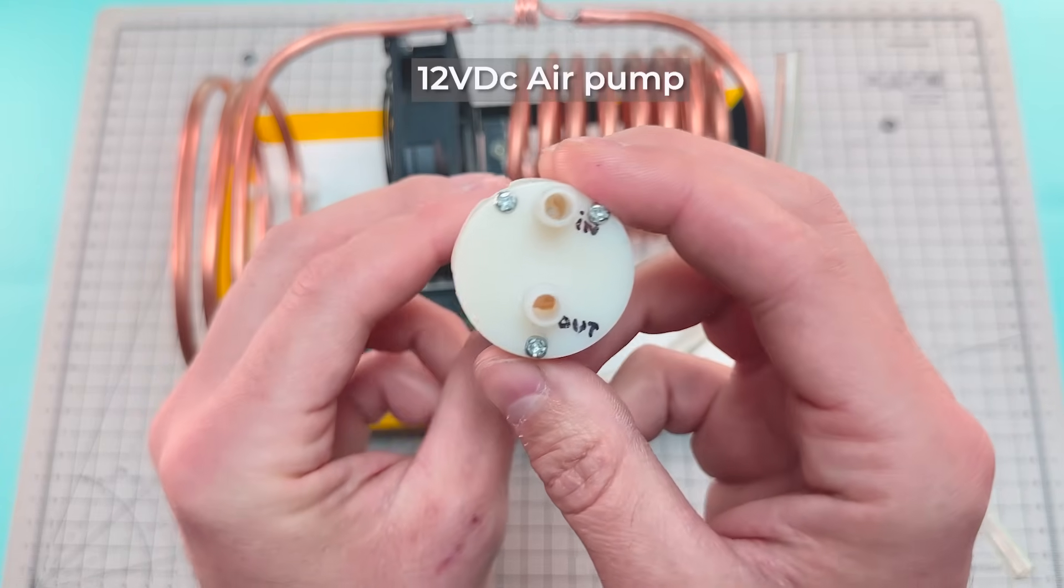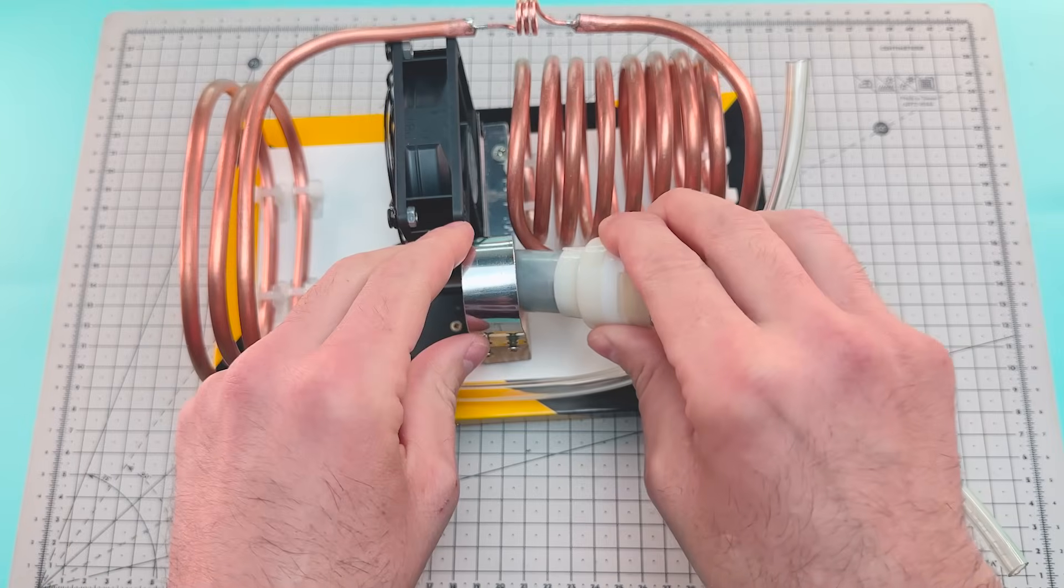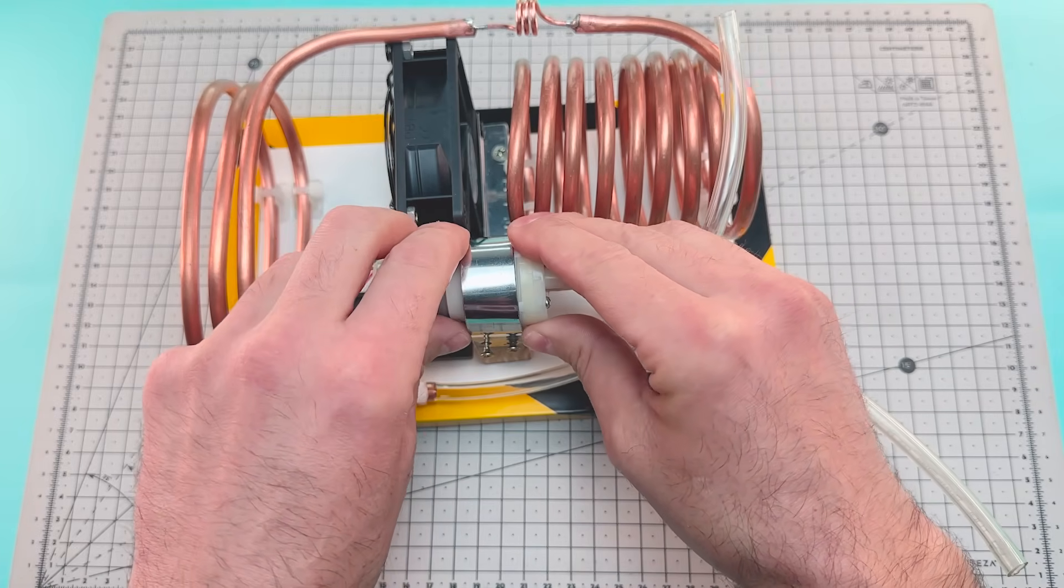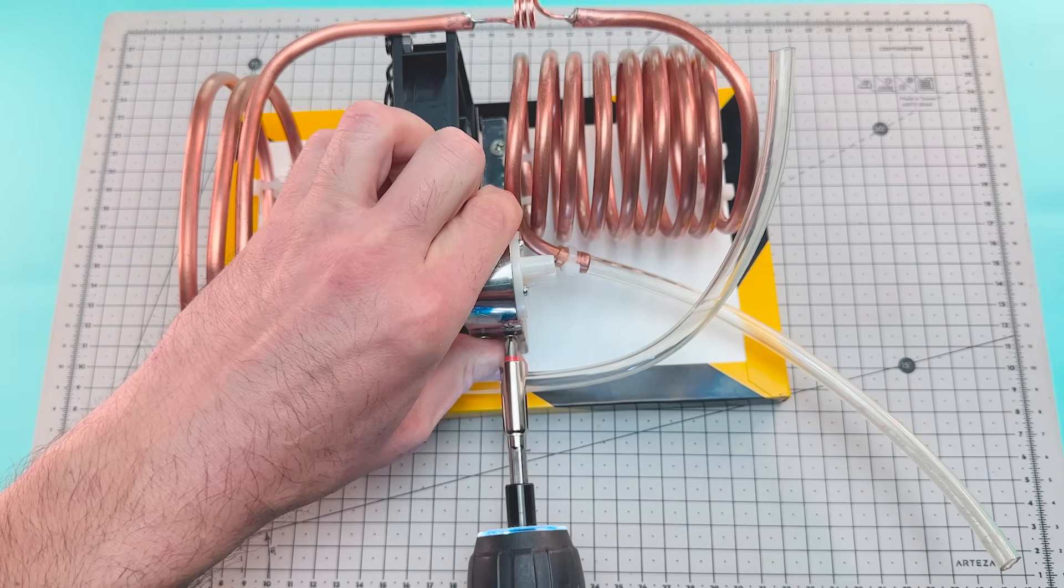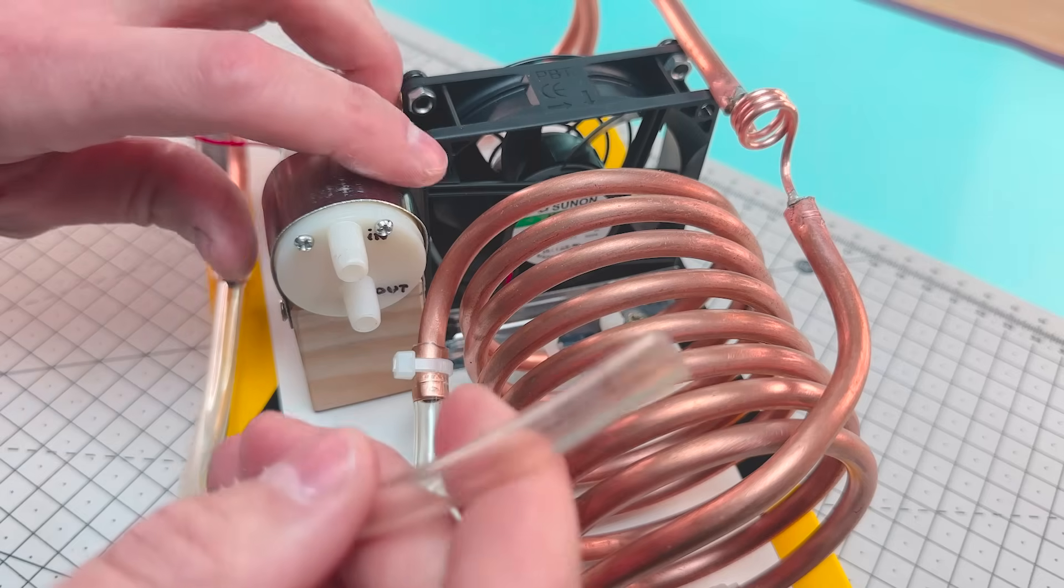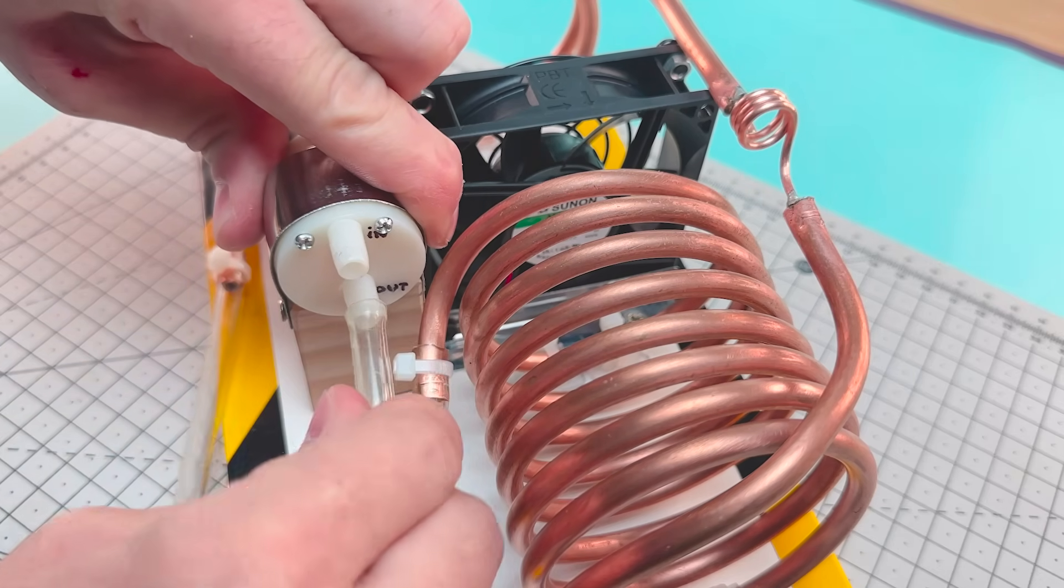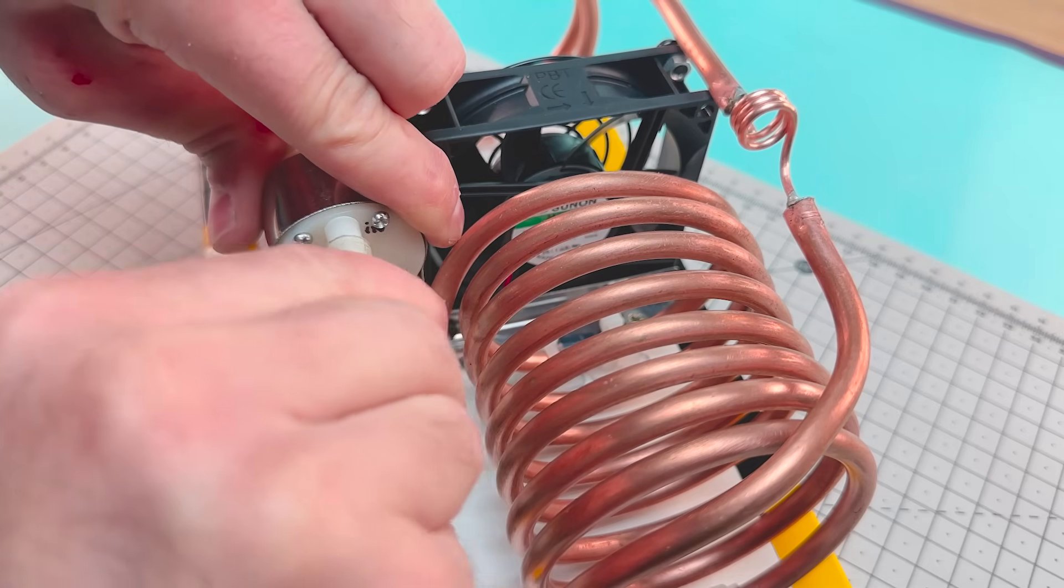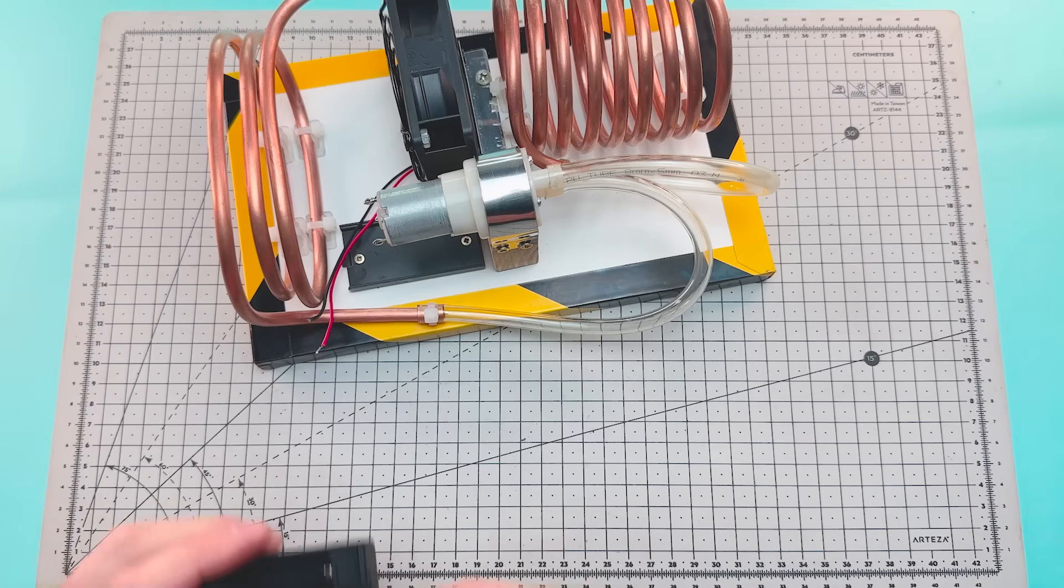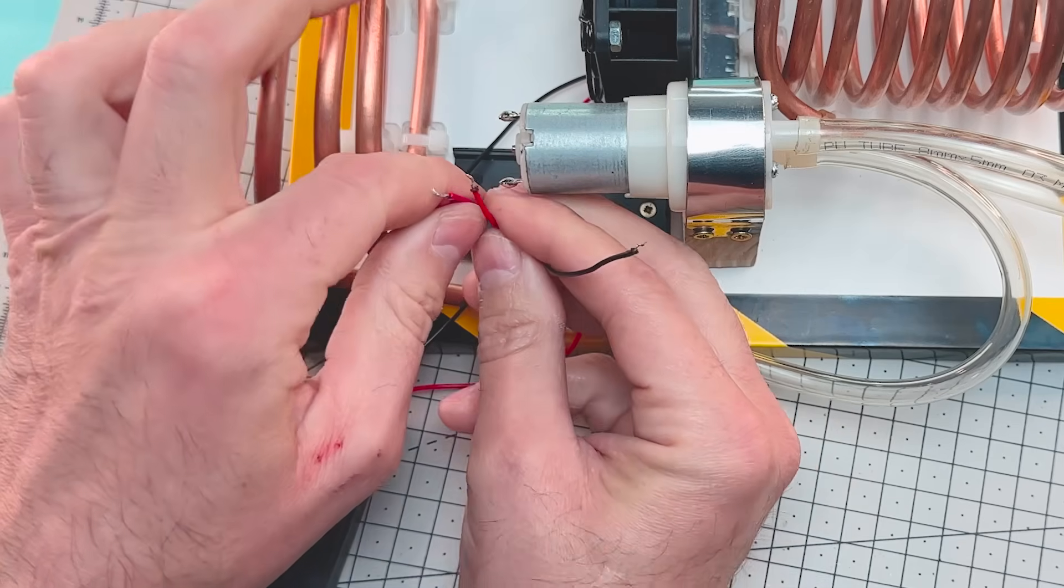Then we'll place a 12-volt air pump on the previously installed support. Now we connect the pump outlet to the condenser and the inlet to the evaporator. And we'll connect both the air pump and the fan to the battery mounted on the wooden base.